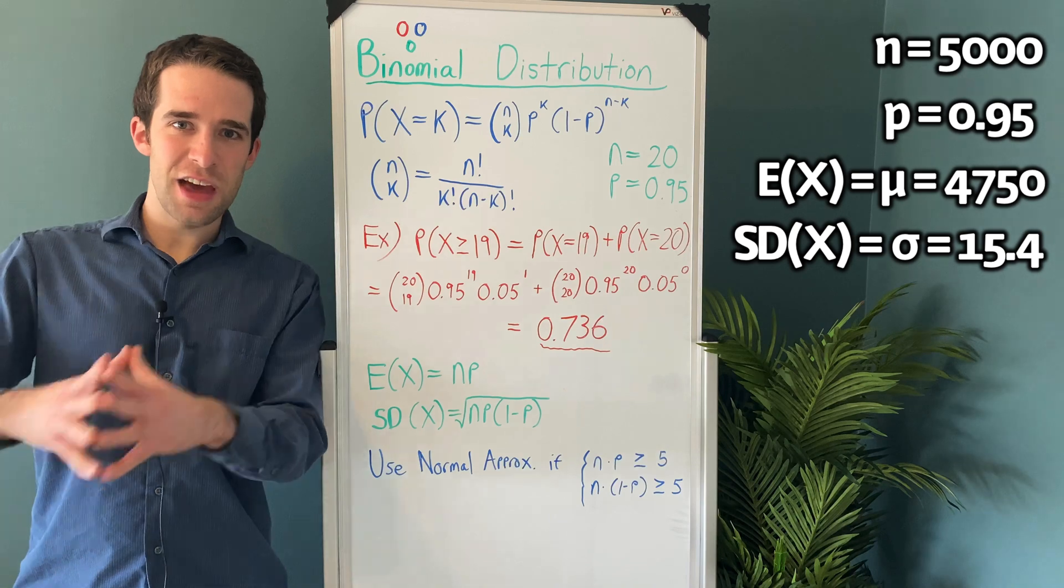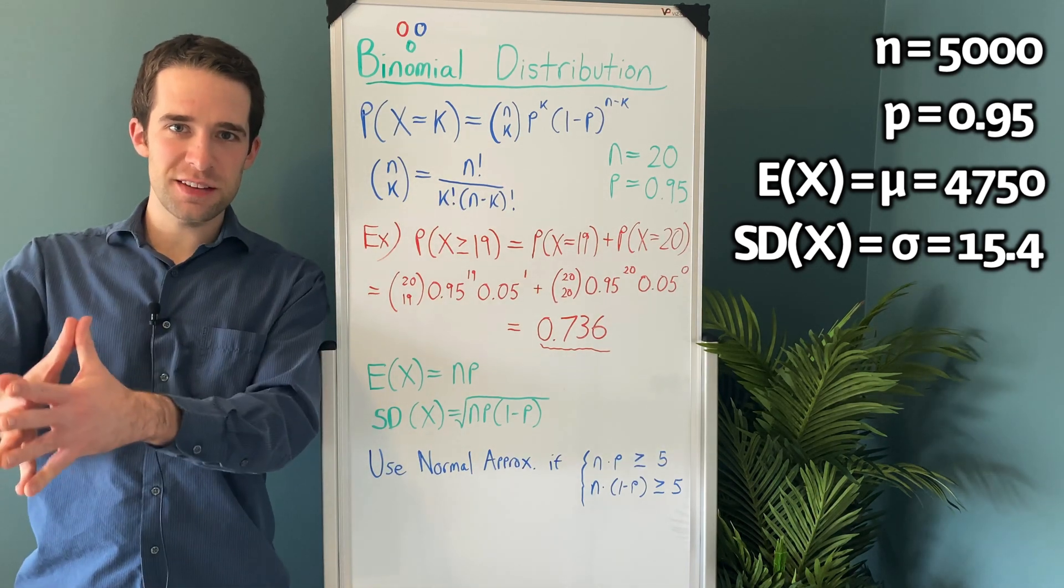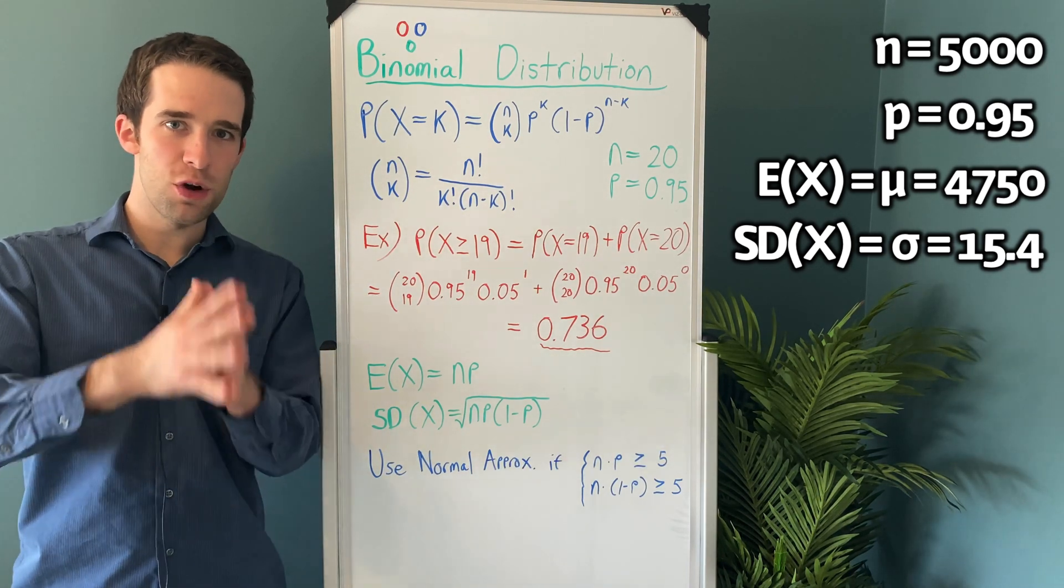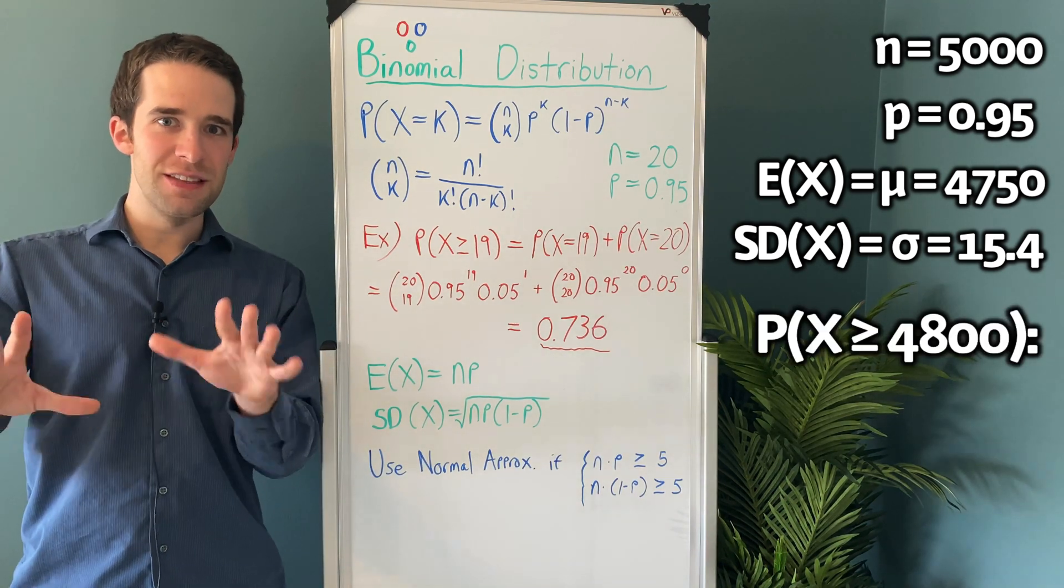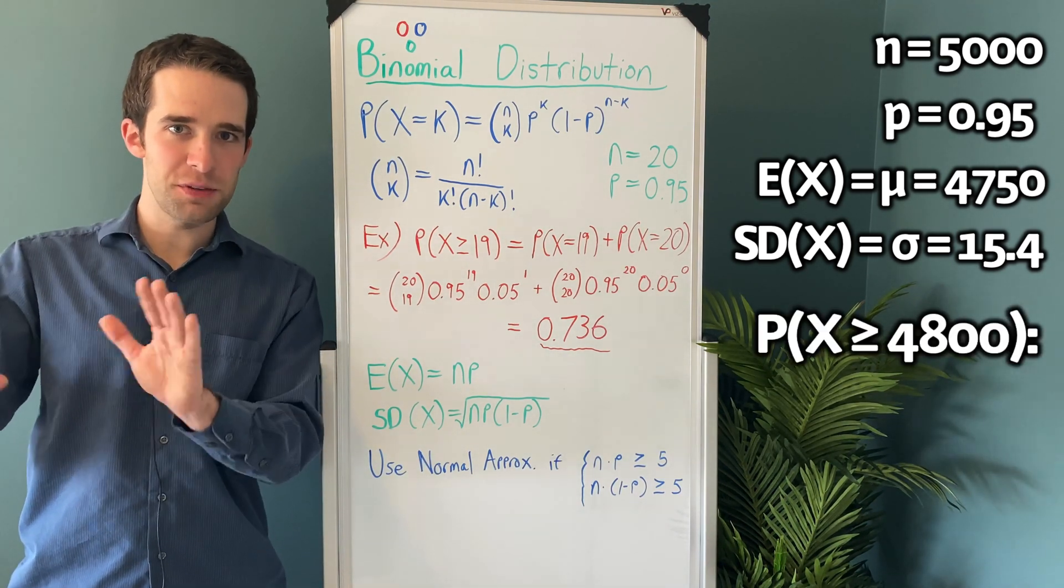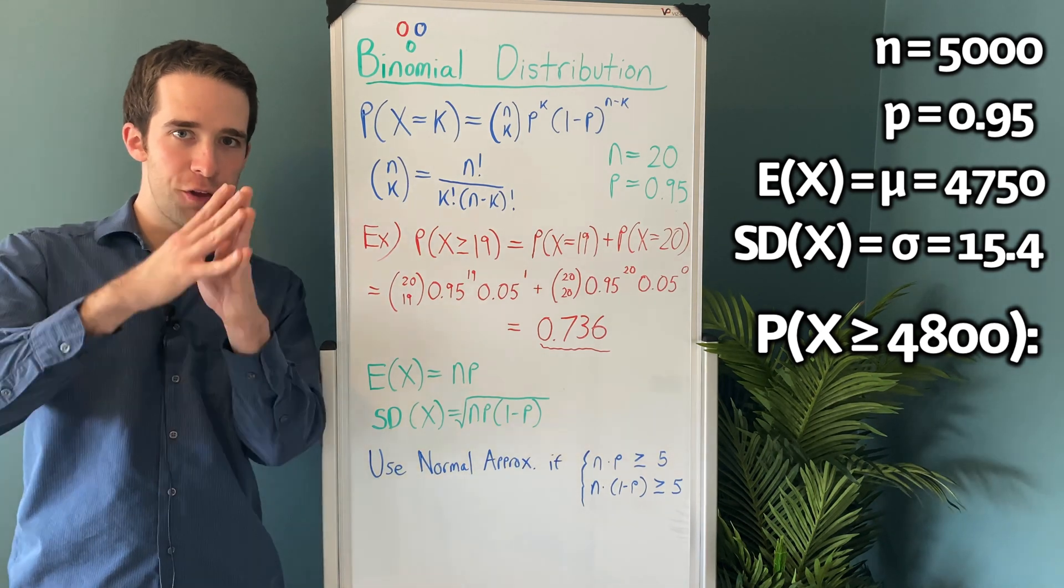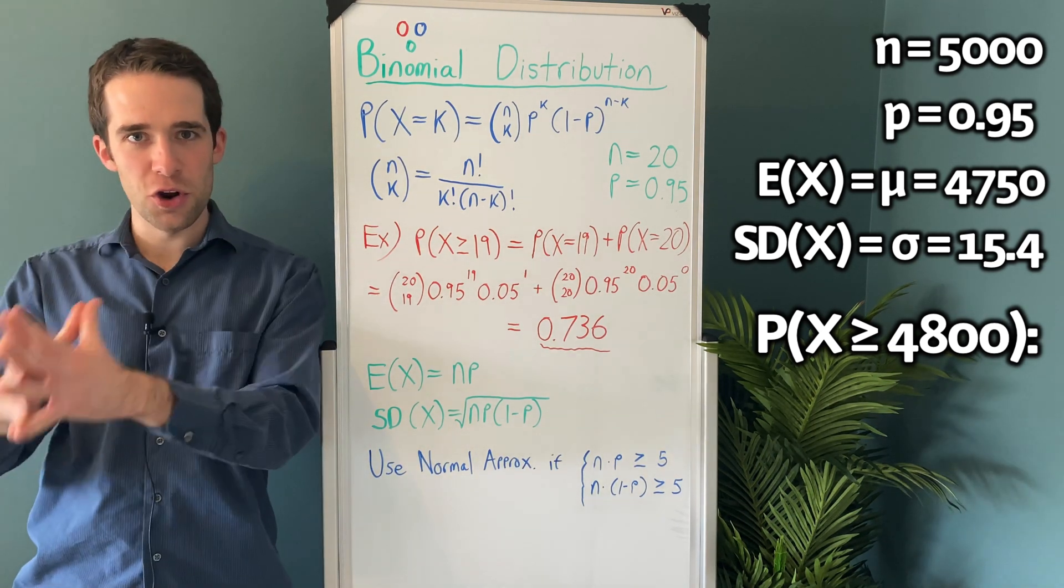Now suppose you were to ask if we have 5,000 subjects, what's the probability that 4,800 or more of them survive? Well actually, in this case where we have a large sample size, we can use what's called the normal approximation to the binomial distribution.